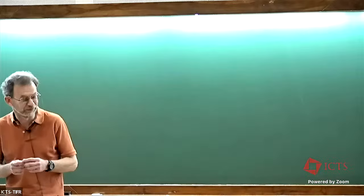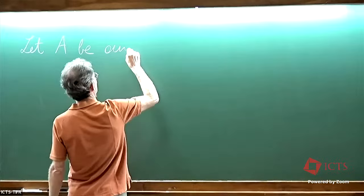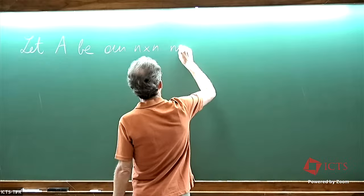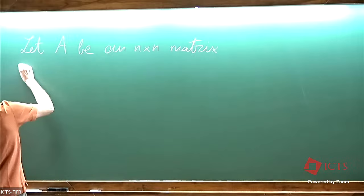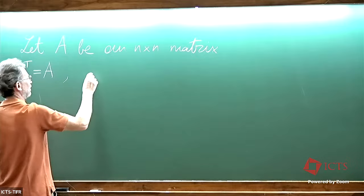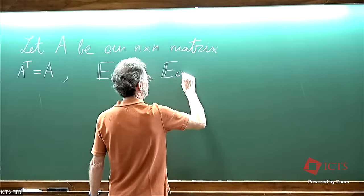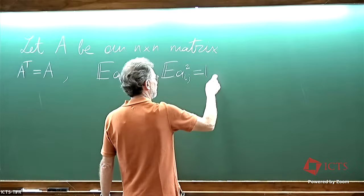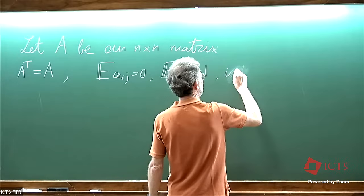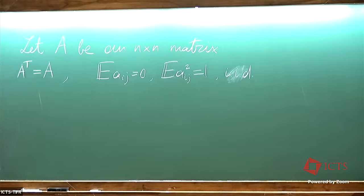There was a day break, so I have to remind you what we did last time. We are discussing invertibility of symmetric matrices. Let A be m by m, such that it is symmetric, and the entries are centered of variance 1. They are IID up to the symmetry restriction.